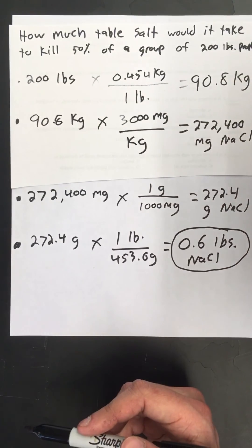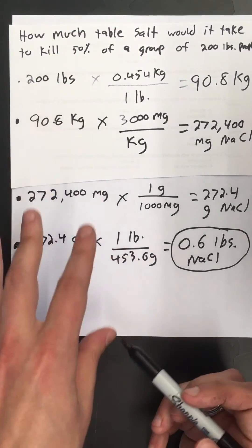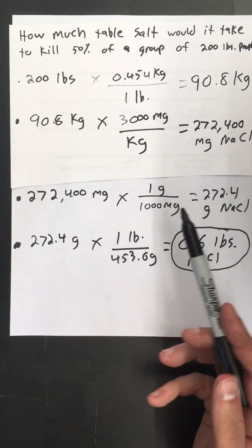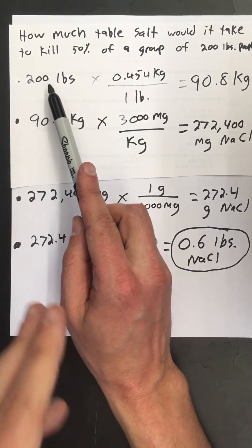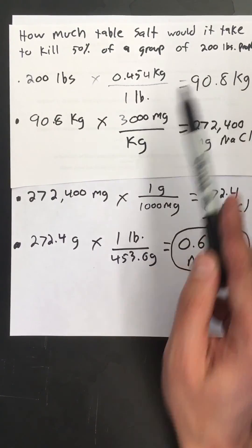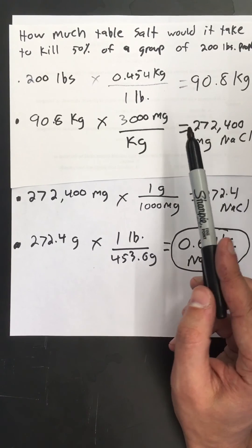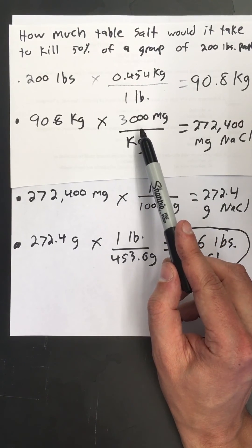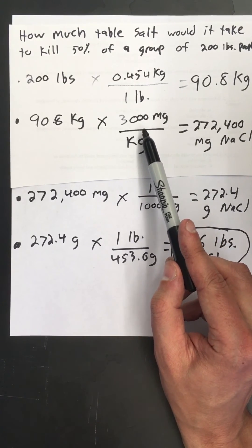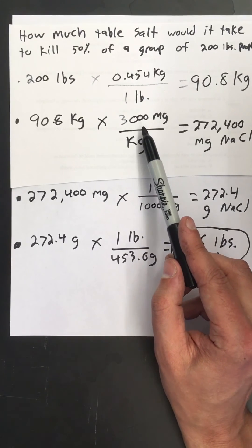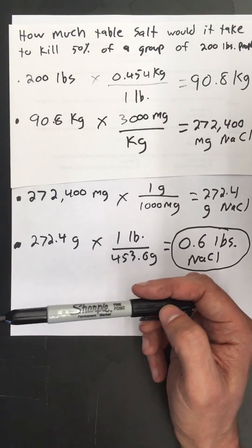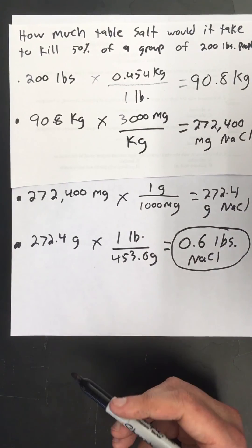So when you do LD50 problems you can kind of use this as your guide, but what's going to change is you're going to have to put in your personal weight and turn that into a mass. And then this number here, which is the LD50 for whatever substance you're talking about, is also going to change. If you're looking up something that's very toxic that number will be lower. If you're looking up something that's not that toxic that number might be higher.